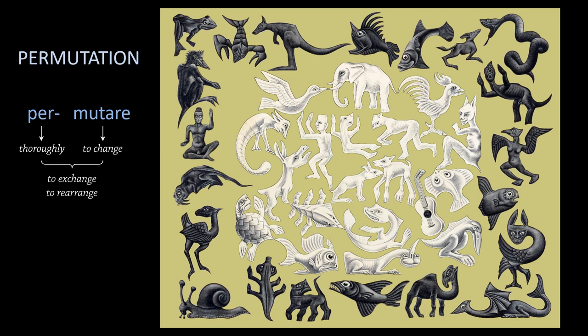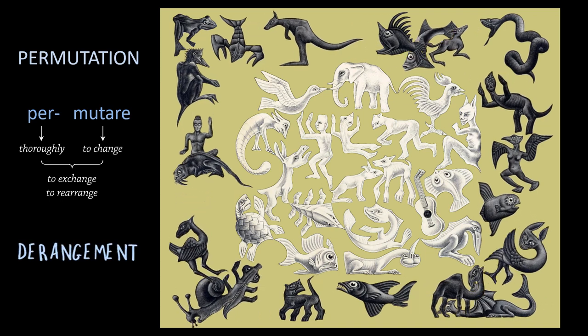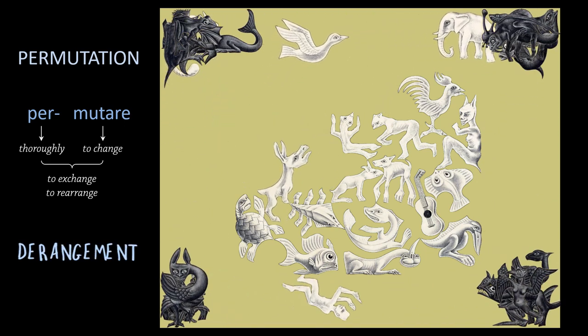The most thorough kind of permutation, where things get fully rearranged, is also known as a derangement, a permutation taken to the extreme.